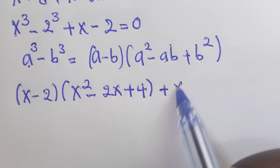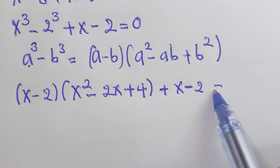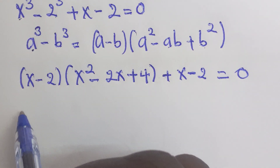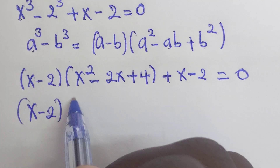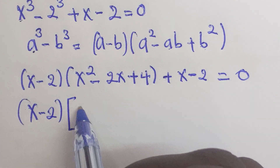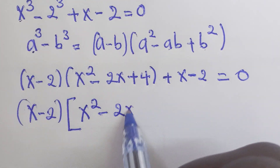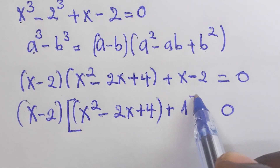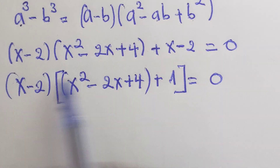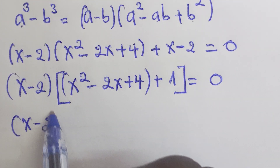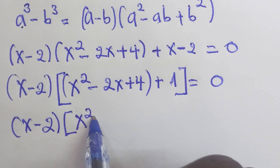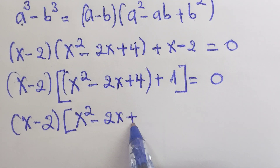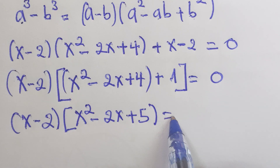Then plus x minus 2, equal to 0. By factorization, x minus 2 times the bracket of x squared minus 2x plus 4 plus 1, equal to 0. This will be x minus 2, times the bracket x squared minus 2x plus 5, which equals 0.